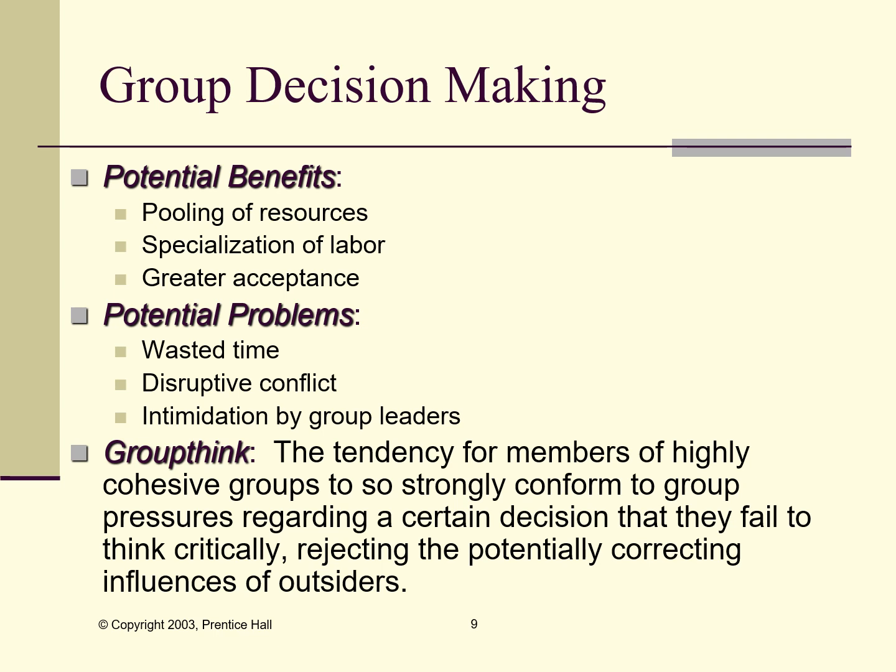Group decision-making generally has positive benefits — it's why we focus on having teams make decisions. It's a pooling of resources; gathering information is easier as a group. It allows specialization of labor, so you can create a group with expertise in all areas that might affect the decision. Generally, if a group of people all come to a consensus, there's greater acceptance of the decision. However, group decision-making will take longer and require more time from individuals. There may be disruptive conflict or a failure to reach consensus, and we need to ensure every group member has an equal voice without being dominated by group leaders.